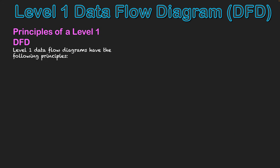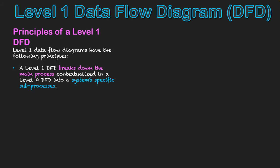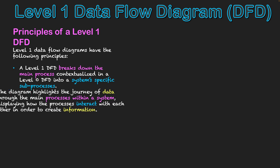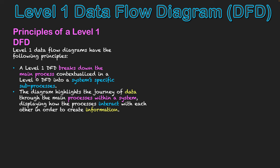Let's look at some key principles related to a level one DFD. Firstly, it breaks down the main processes contextualized in the level zero DFD into the system's specific sub-processes, involving multiple circles. Secondly, the diagram highlights the journey of data between the main processes within a system, showing how these different processes interact with each other and how data changes between each process to create information for external entities.